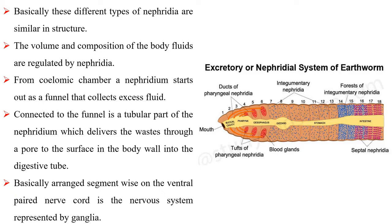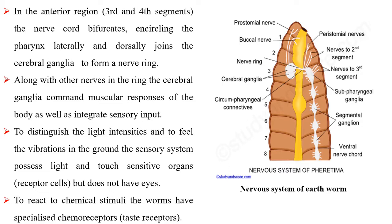Arranged segment-wise on the ventral paired nerve cord, the nervous system is represented by ganglia. In the anterior region, the nerve cord bifurcates, encircling the pharynx laterally and dorsally, joining the cerebral ganglia to form a nerve ring. Along with other nerves in the ring, the cerebral ganglia command muscular responses of the body as well as integrate sensory input.